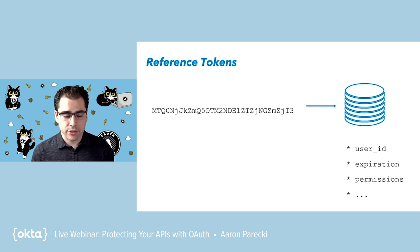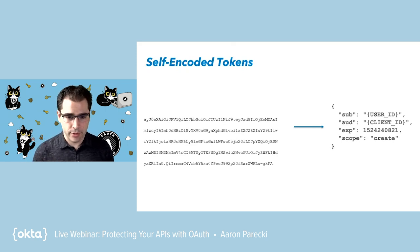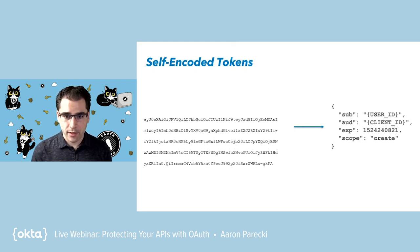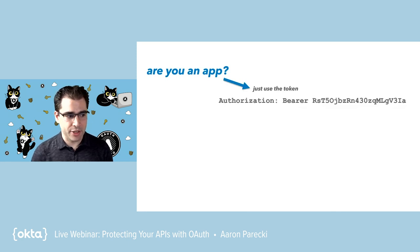The idea with a self-encoded token is that the token string itself encodes the data that the resource server — the API — needs in order to process the request. So if you need to know who the user is that this access token was issued to, when it expires, or what scope it was issued for, you would encode that data into a string in a way that is not able to be tampered with, and use that string as the access token itself. The application doesn't care about this difference — it just takes the token, puts it in an API request, and carries on.